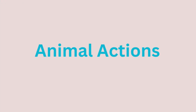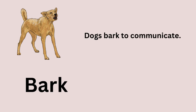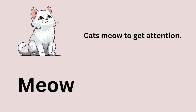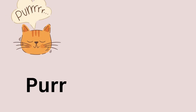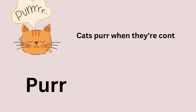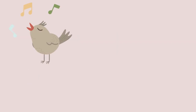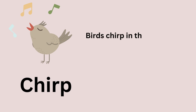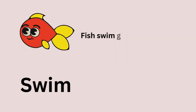Animal Actions. Bark — dogs bark to communicate. Meow — cats meow to get attention. Purr — cats purr when they're content. Chirp — birds chirp in the morning. Swim — fish swim gracefully in water.